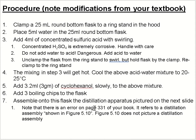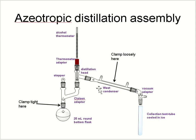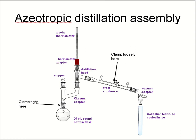Assemble the distillation apparatus as shown on the next slide. Clamp the 25 mL round bottom flask containing the water, acid, and cyclohexanol mixture. Add a thermometer to measure the temperature, then attach a distillation head. After that, add a condenser through a vacuum adapter and a collector or test tube. Cold water will be traveling through the condenser so that the vapor is cooled and forms liquid, which we can collect in the test tube.